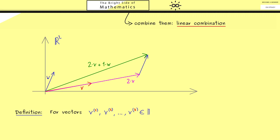These will be vectors in R2, but you already know we will generalize this eventually. Now in addition we also need our scaling factors, and let's call them λ1, λ2 until we reach λk. And as you know these should be real numbers.